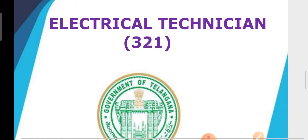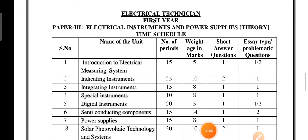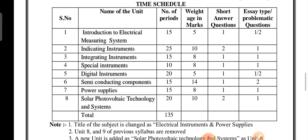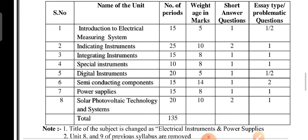So let me show you — this is the electrical technician course for the first year students in Telangana state. We are looking at the basic electrical engineering and wiring paper. This is the second paper — the thought paper. It covers electrical instruments and power supplies for first year ITC students. There are eight units on the right side.